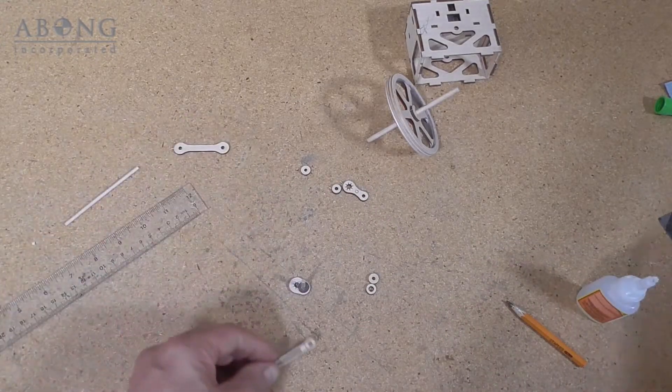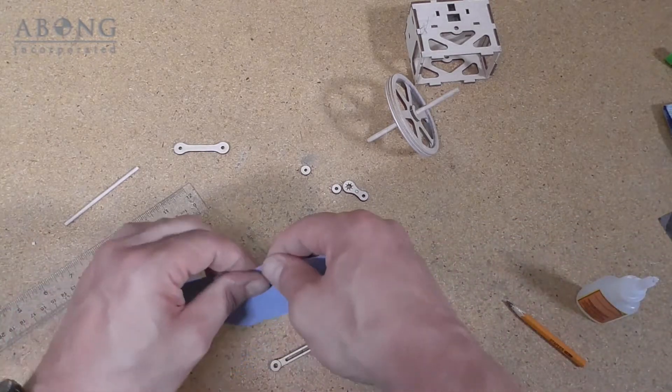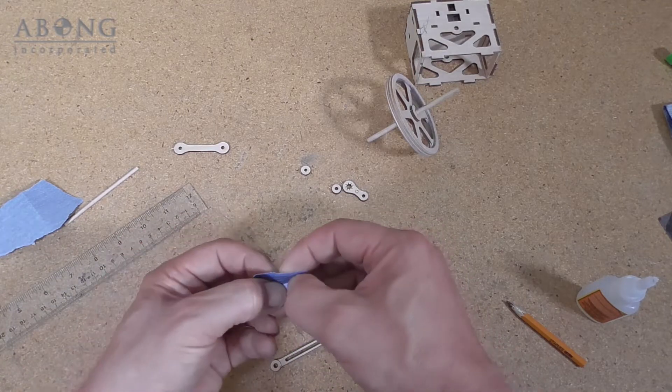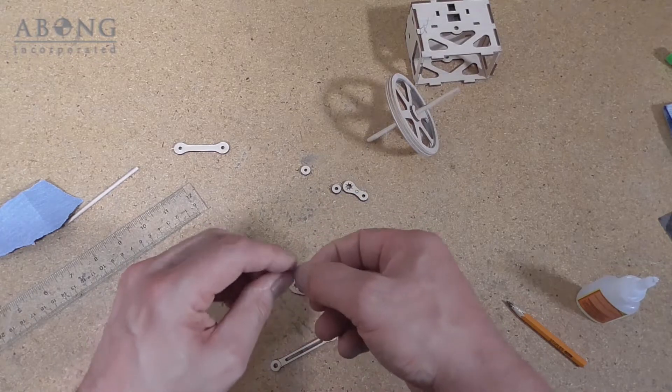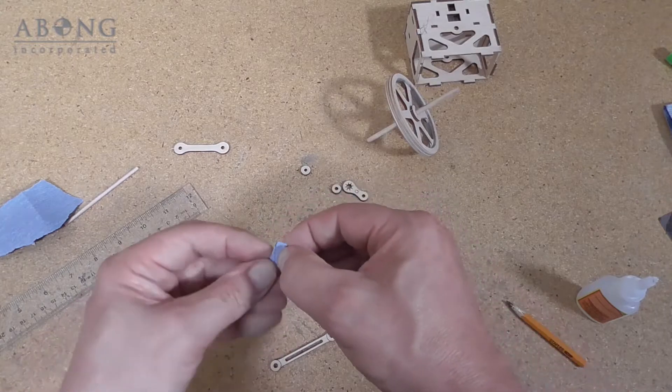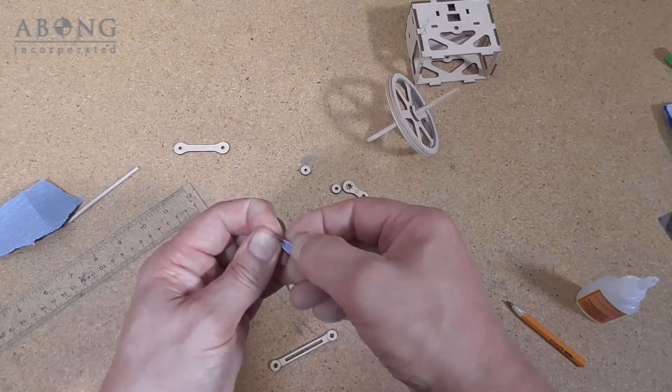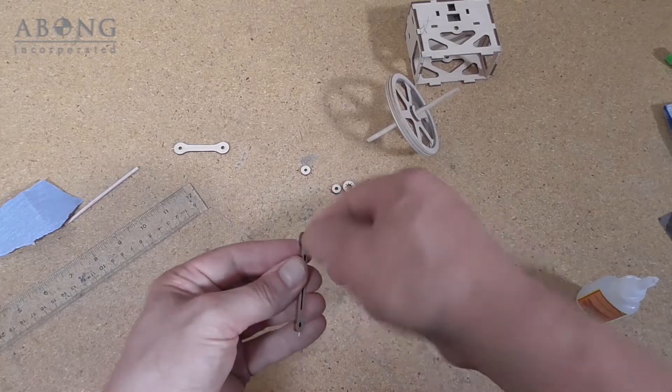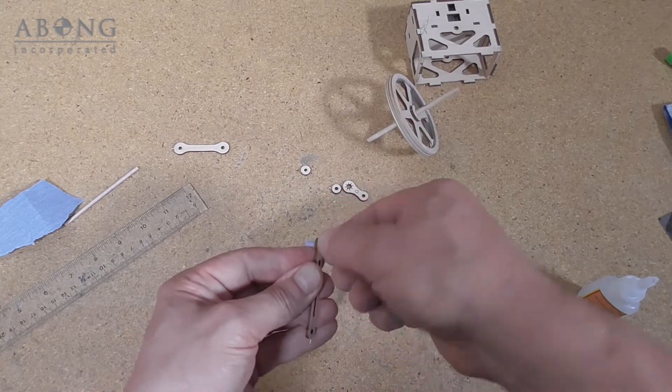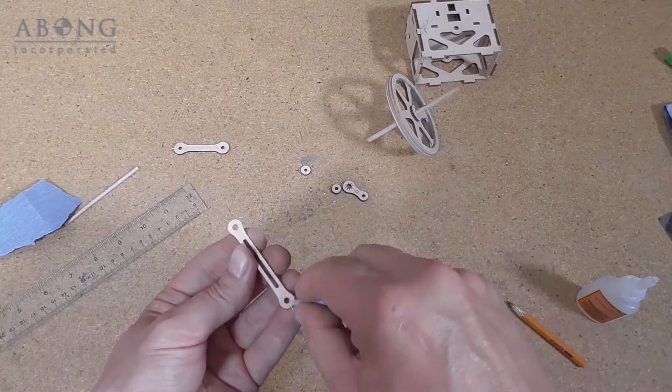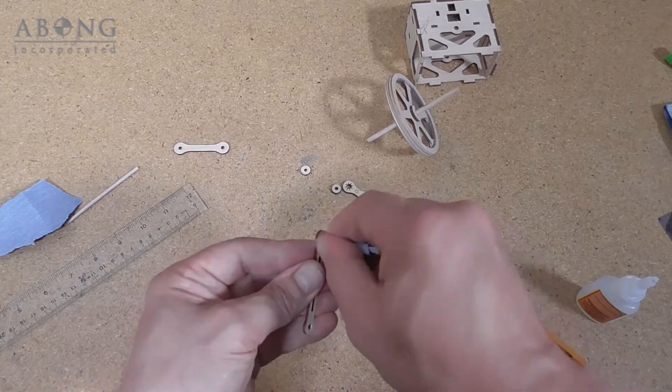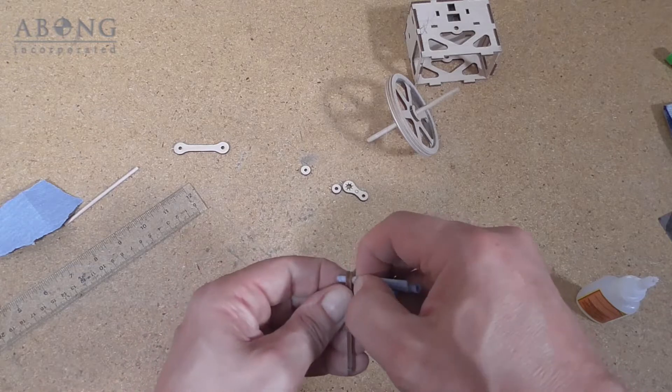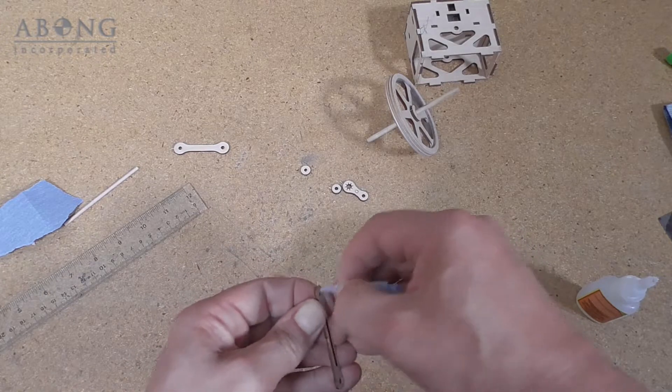The next thing we're going to do is we're going to grab a little piece of our 220 grit paper and we're going to make sure that the holes in our connector are nice and smooth. And then we're going to add some graphite. We're just making sure that we can feed the sandpaper through the hole. That's one hole.